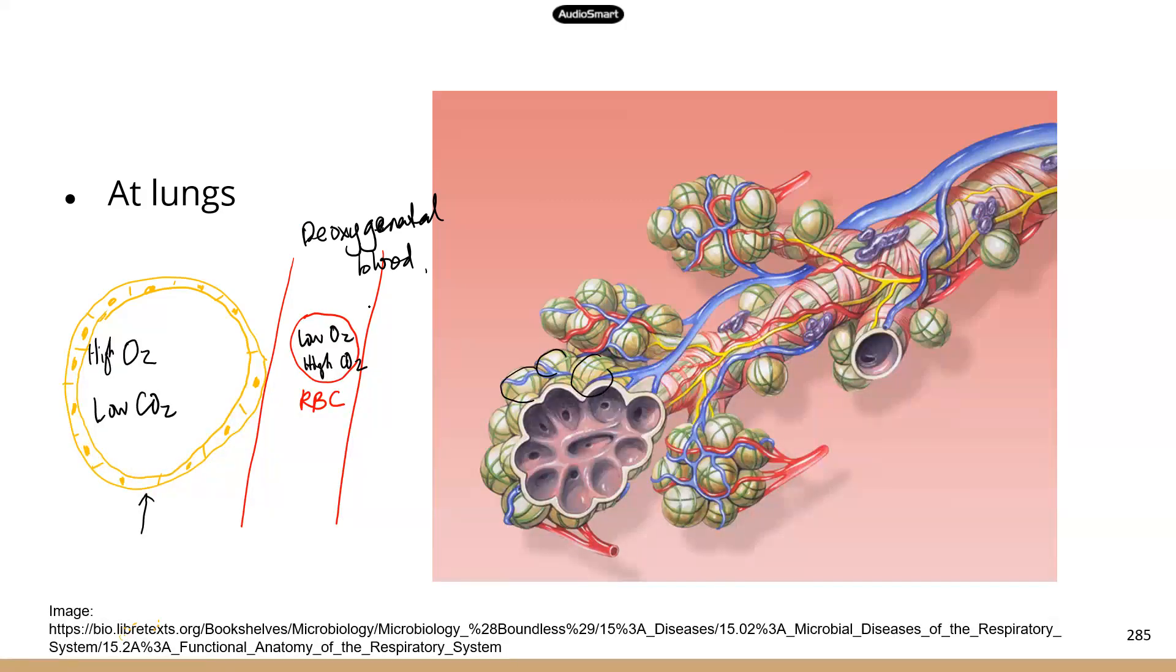So again, now you have a concentration gradient for those gas molecules. So they're just going to diffuse. They're going to move from high concentrations to low concentrations. So what happens at the lungs is that the oxygen is going to leave alveoli into the blood, into the red blood cells.